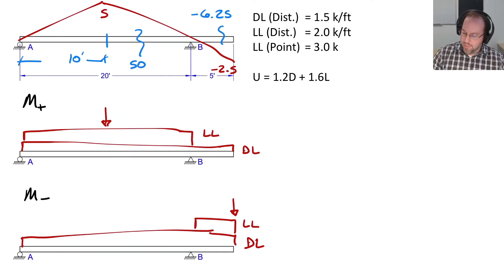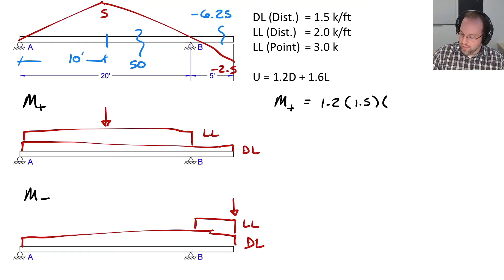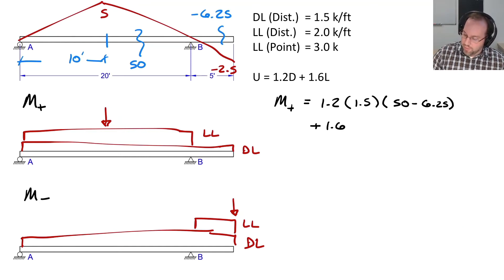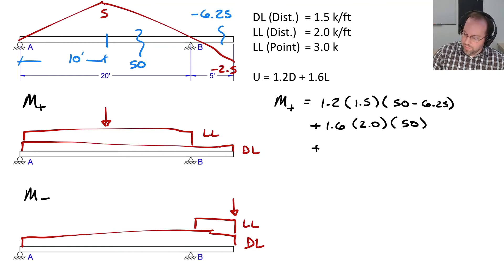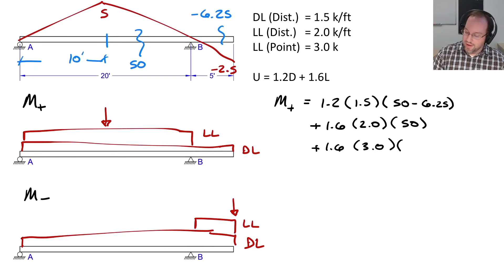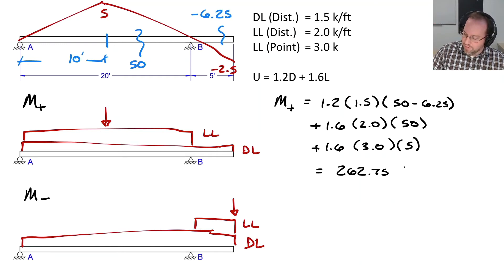Calculating M+: dead load term is 1.2 × 1.5 kips/ft × (50 − 6.25). Live distributed load: 1.6 × 2.0 kips/ft × 50 (the positive area). Point load: 1.6 × 3 kips × 5 (the peak influence). Calculating all of that out gives a moment of 262.75 kip-feet.